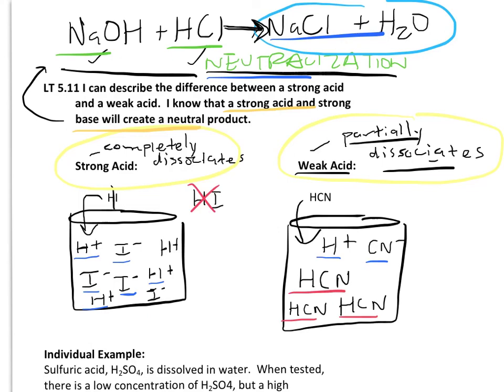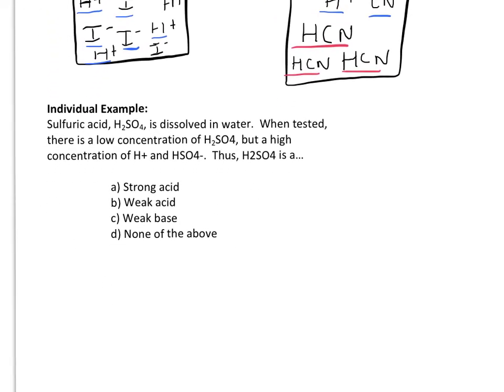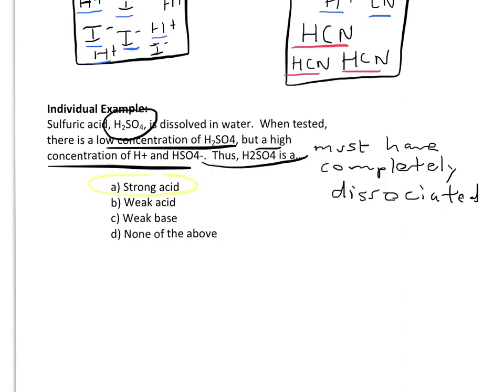Now in this individual example choose the best answer and be ready to explain why. It says that in this example the acid is H2SO4. It's dissolved in water. And when tested they can't really find any H2SO4 left, a very low concentration. But what they do find is a high concentration of H plus and HSO4 minus. Again, which is the split here between this acid. So we could assume that it must have completely dissociated. And if something completely dissociates it means it's a strong acid.